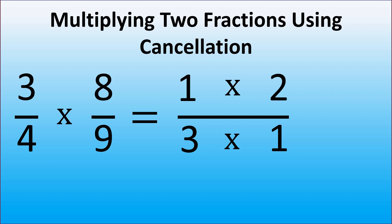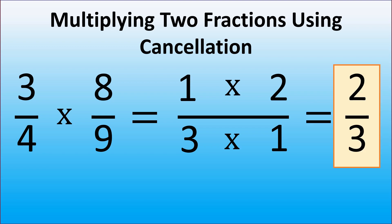Thus, we have 1 times 2 in the numerator and 3 times 1 in the denominator, and that is equal to 2 over 3.